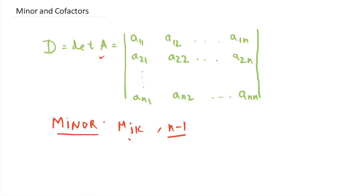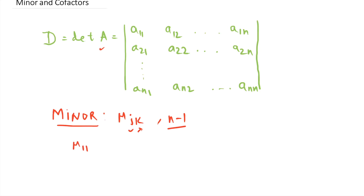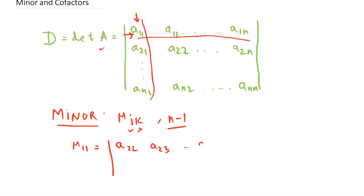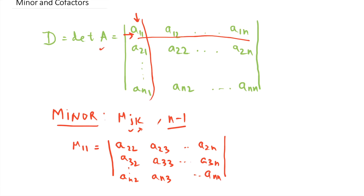The minor M_jk is obtained by deleting the jth row and the kth column. For example, to evaluate M_11, I'll eliminate the first row and the first column, and I'll be left with a determinant of order n minus one: a_22, a_23, ..., a_2n; a_32, a_33, ..., a_3n; and a_n2, a_n3, ..., a_nn.